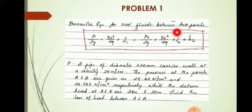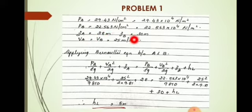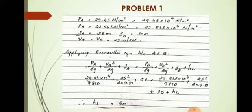In this equation, which is the term for loss of head? HL is the loss of head. So first we will write the given data. PA is given, PB is given, ZA is the datum head at A, ZB is the datum head at B. Then VA equals VB equals 25 meter per second, because 25 meter per second is the velocity inside the pipe and both points are inside the pipe, so the velocity is the same.